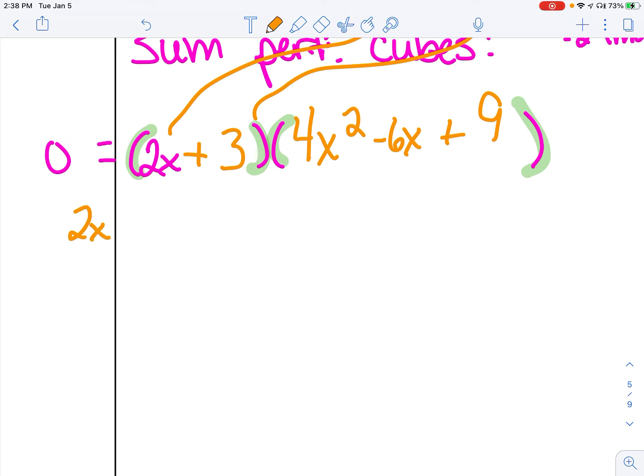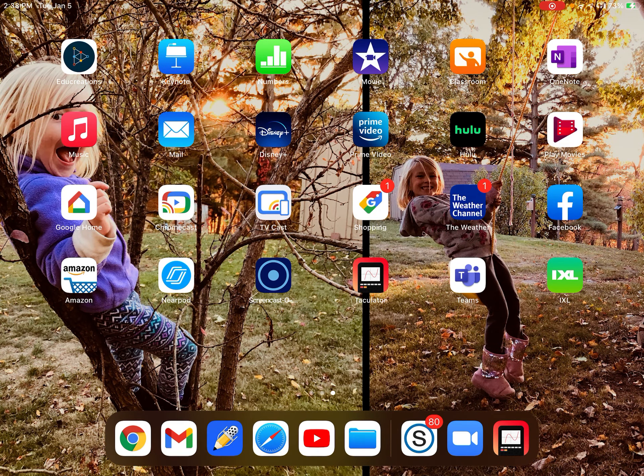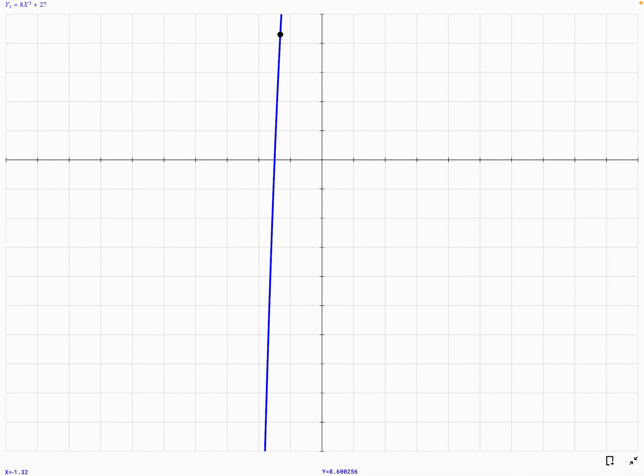So 2x plus 3 gets set equal to 0. That's a pretty darn easy one to solve, right? Subtract 3, divide by 2. That's one answer. Remember, I have three answers total. So my first answer is negative 3 halves. And I knew I was, remember on my graph? Remember how it crossed one time? I just found it. That must be at negative 3 halves or negative 1.5.